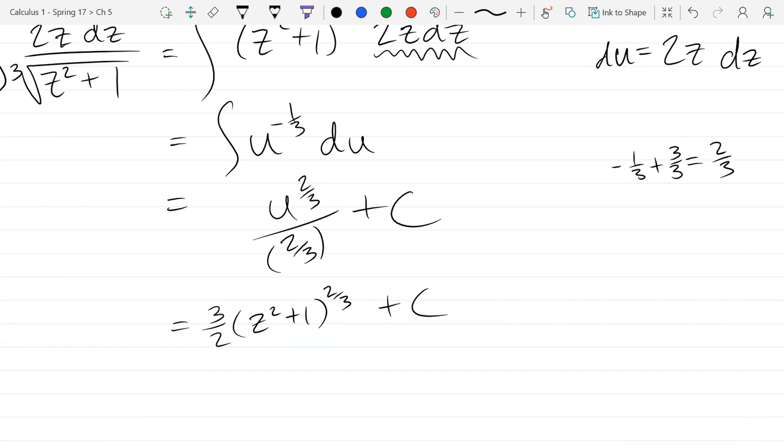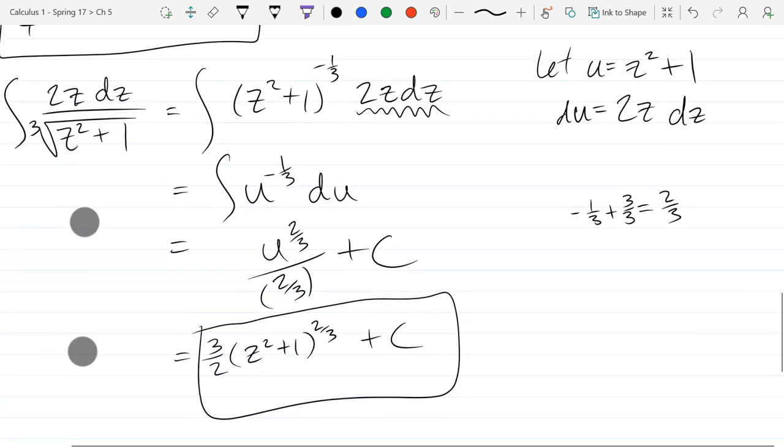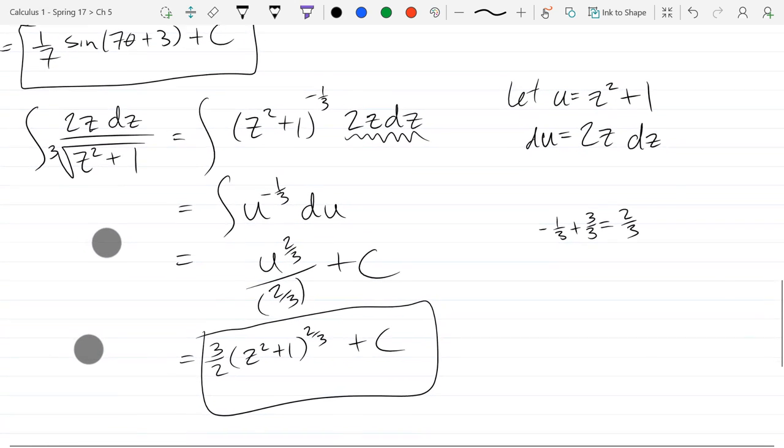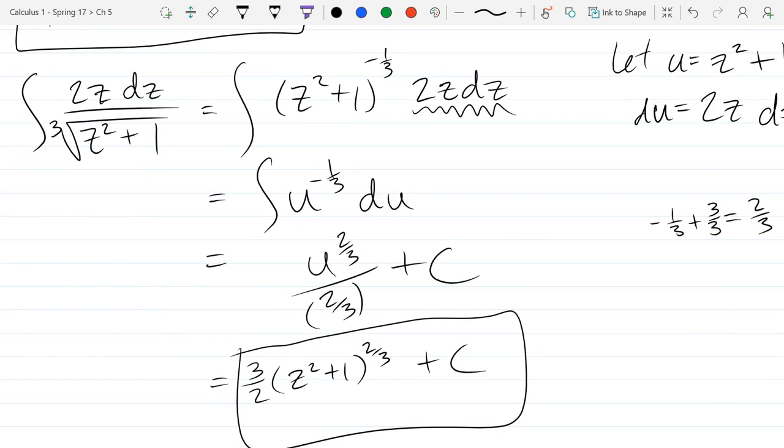So how do we check if we're right? Seems like we're okay. We got back to z's. Don't leave your answer in u's. U is something that you made up along the way. We have to come back to z's, or x's, whatever you started with. So I could take a z derivative and I better get back to what I started with. So we're only doing two more example problems.